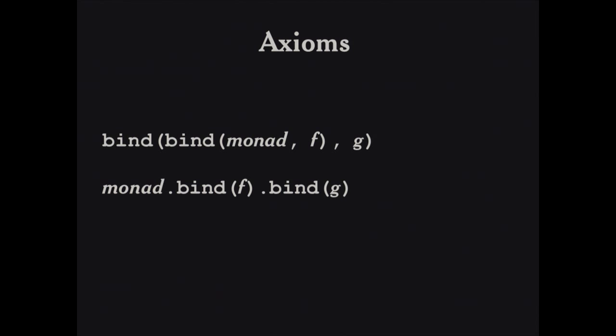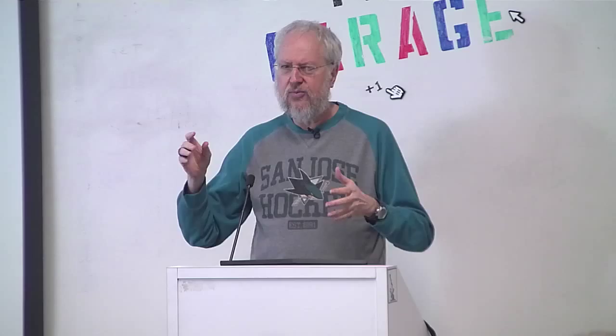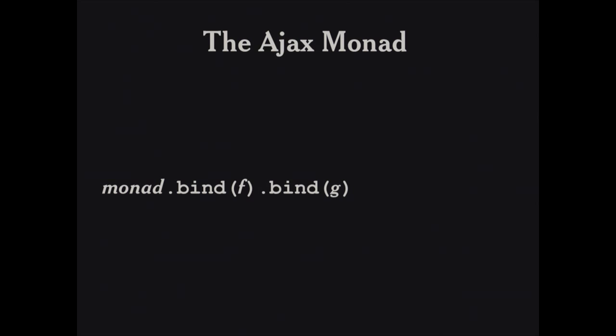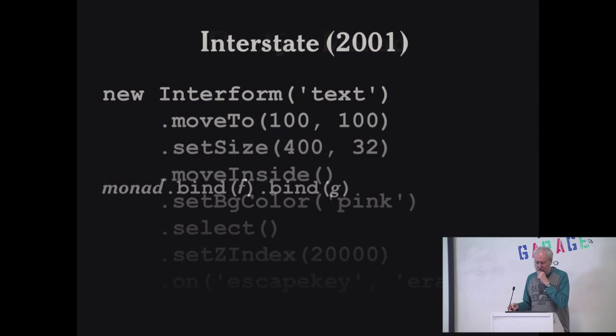Any of you who have done Ajax programming might notice there's something familiar about this pattern — I've got an object, I call a method on it, and I call another method on the result. It's the Ajax monad. All of the Ajax libraries do this: jQuery, YUI, everybody. We've been doing this for years. It turns out we've been doing monads all along.